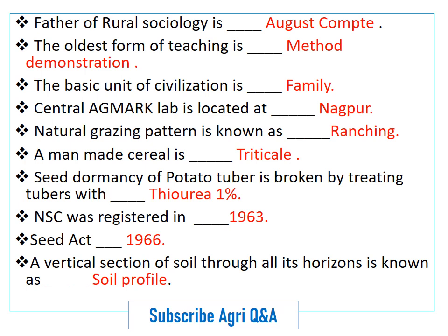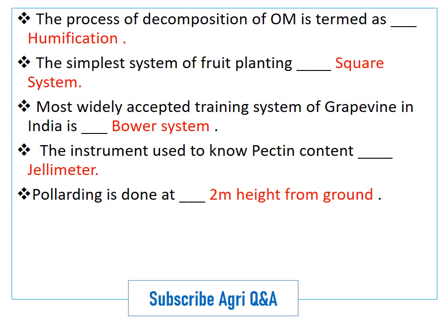A vertical section of soil through all its horizons is known as a soil profile. The process of decomposition of organic matter is termed humification. The simplest system of fruit planting is the square system.